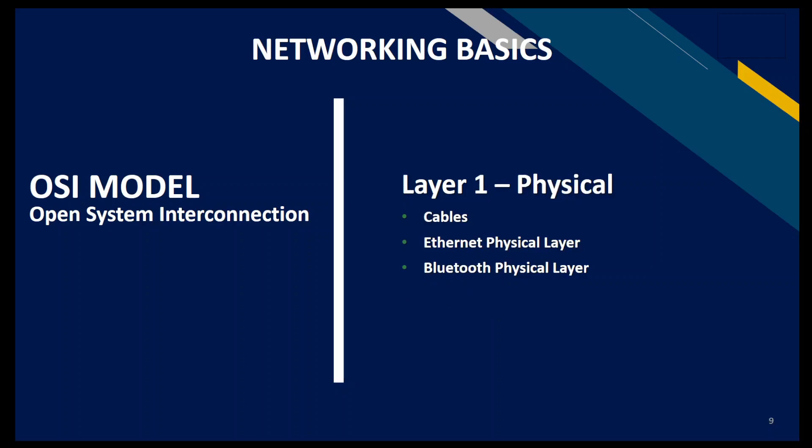Layer one is the physical layer — the actual hardware: cables like Cat5, Bluetooth adapters, and other physical devices. This is where data is represented as electronic bits — ones and zeros, positive and negative signals — being transmitted into your device. These electronic signals are then converted back by applications into a graphical interface you can relate to, such as pictures, video, or text messages.